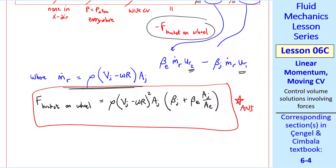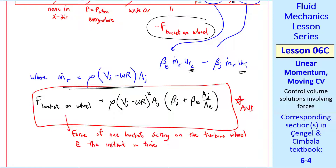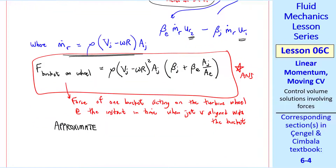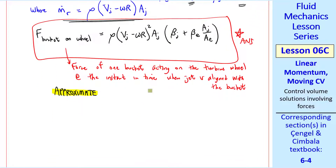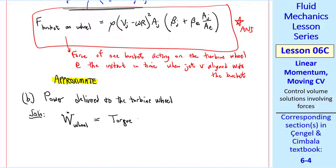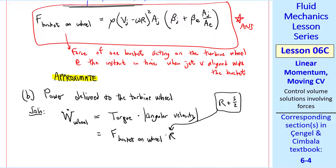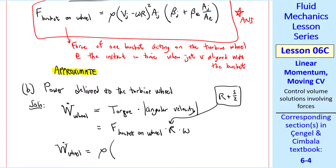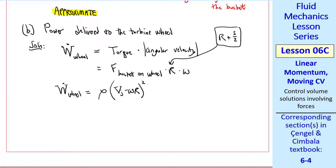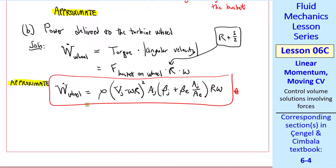This is our answer in variable form — the force of one bucket acting on the turbine wheel at the instant the jet is aligned with the bucket. Keep in mind this is only an approximation since we're treating a rotating frame as inertial, but it's reasonable for small buckets and a large wheel. For Part b, the power delivered to the turbine wheel is w-dot_wheel equals torque times angular velocity. The torque is the force times R, and angular velocity is omega, giving power equal to rho times (vj minus omega R) squared times aj times (beta_j plus beta_e times aj over ae) times R times omega.